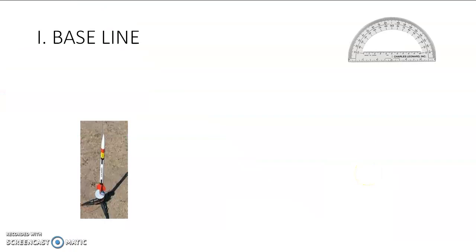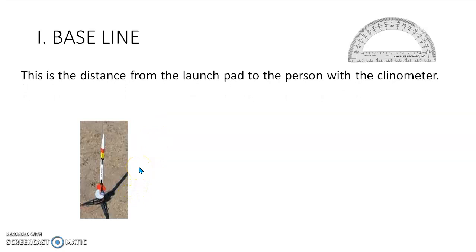First thing we're going to need is the baseline. The baseline is really pretty simple. It's the distance between the launch pad of my rocket and the person with the clinometer.